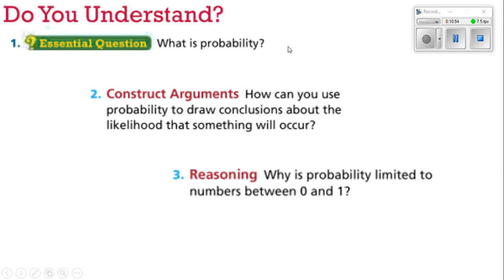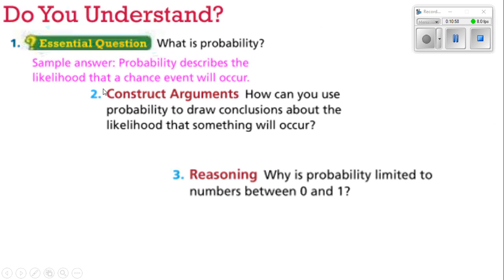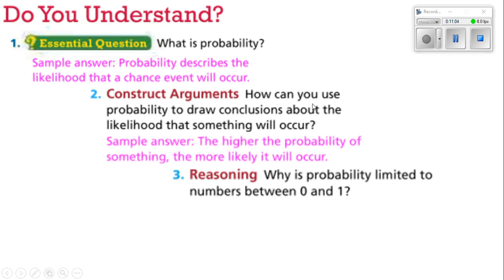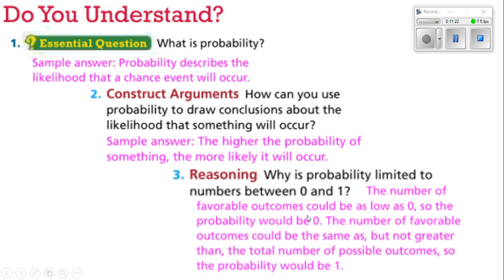What is probability? Probability describes the likelihood that a chance event will occur. How can you use probability to draw conclusions about likelihood? The higher the probability, the more likely it is to occur. Why is probability limited to numbers between zero and one? The number of favorable outcomes can be as low as zero, giving a probability of zero, or equal to — but not greater than — the total number of possible outcomes, giving a probability of one.